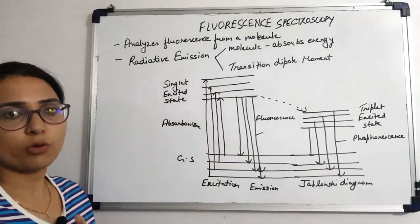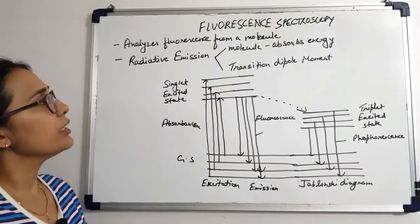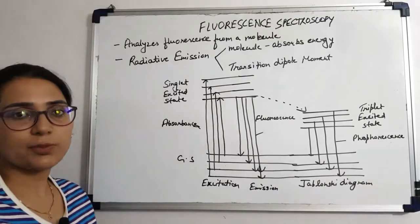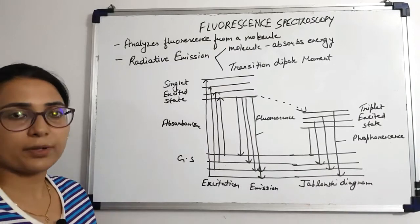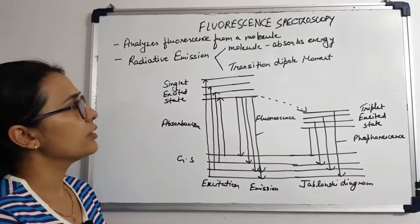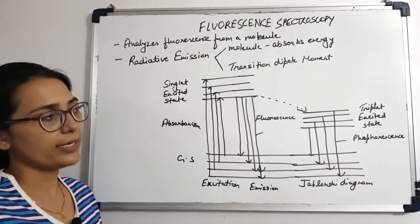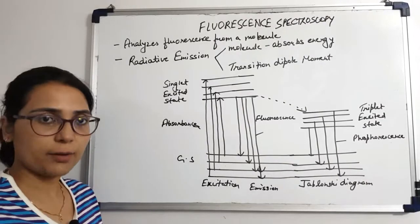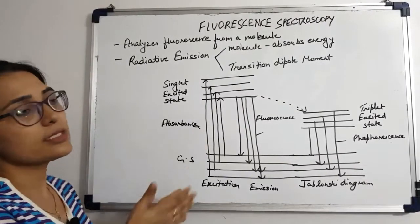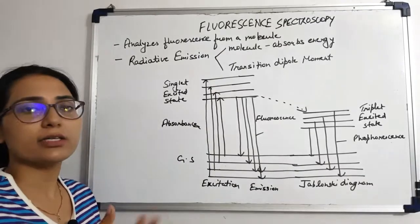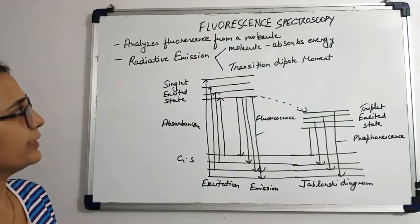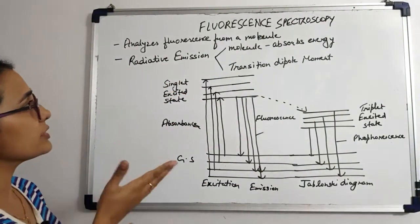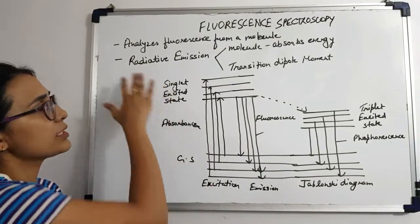Fluorescence spectroscopy, also known as fluorimetry or spectrofluorimetry, is a type of electromagnetic spectroscopy which basically analyzes the fluorescence present in a molecule or a sample based on its fluorescent properties. It involves the use of light, usually ultraviolet light, which causes the electrons of molecules of certain compounds to excite and then results in the emission of light, usually visible light but it can also be a different type of light. Fluorescence is actually a type of luminescence and is basically a radiative emission.